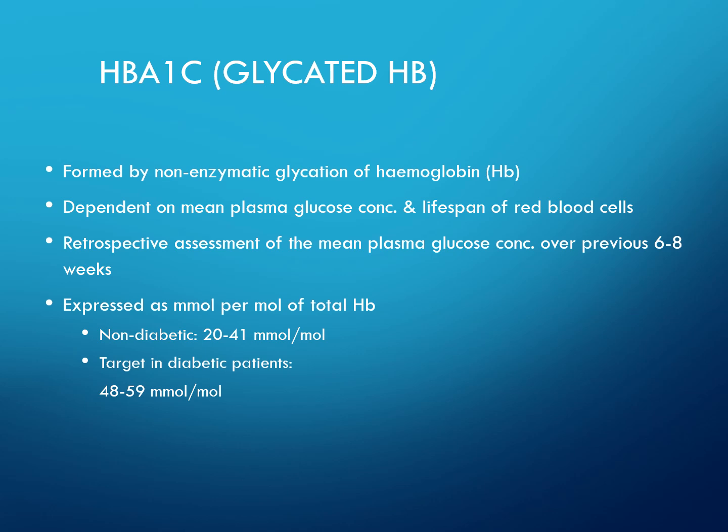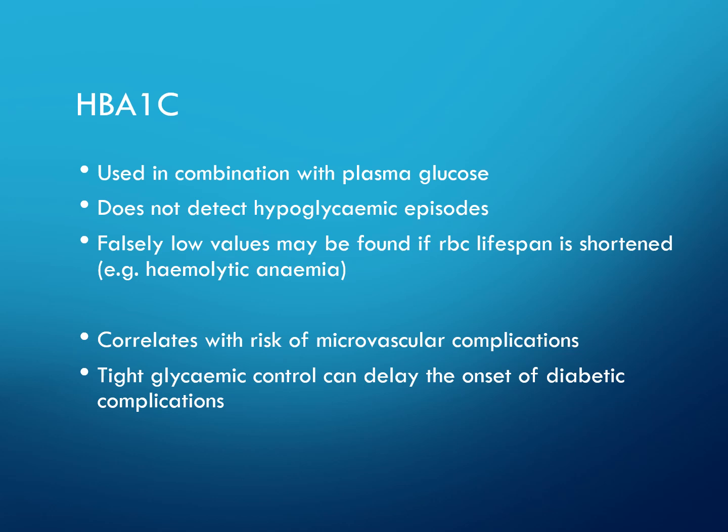Finally, glycated haemoglobin — HbA1c — is formed by non-enzymatic glycation of haemoglobin. It depends on mean plasma glucose concentration and the lifespan of red blood cells, providing a retrospective assessment of mean plasma glucose over the previous 6 to 8 weeks, expressed as millimolar per mole of total haemoglobin. Non-diabetic values are 28 to 41 millimolar per mole; for diabetic patients, it is 48 to 59 millimolar per mole. It is used in combination with plasma glucose, does not detect hypoglycaemic episodes, and falsely low values can occur if red blood cell lifespan is shortened — for example in haemolytic anaemia. It correlates with the risk of microvascular complications, and tight glycaemic control can delay the onset of diabetic complications.